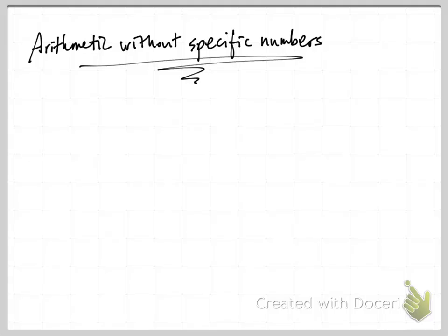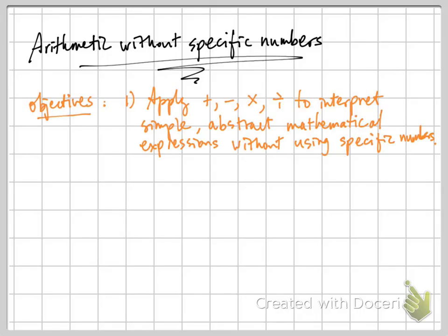In particular, we will apply the functional definitions of four arithmetic operations, namely plus, minus, multiplication, and division to interpret simple abstract mathematical expressions without using specific numbers, and explain where a given mathematical expression involving absolute value, plus, minus, multiplication, or division appear on a certain place on the real number line.